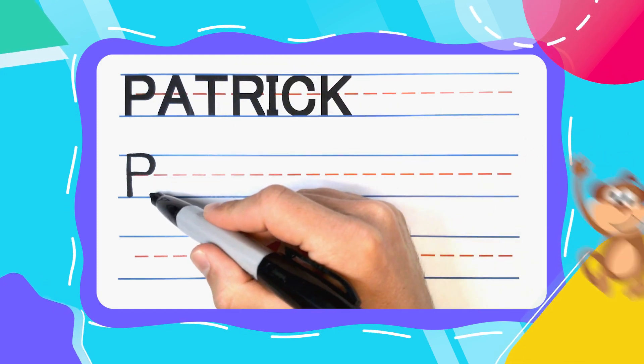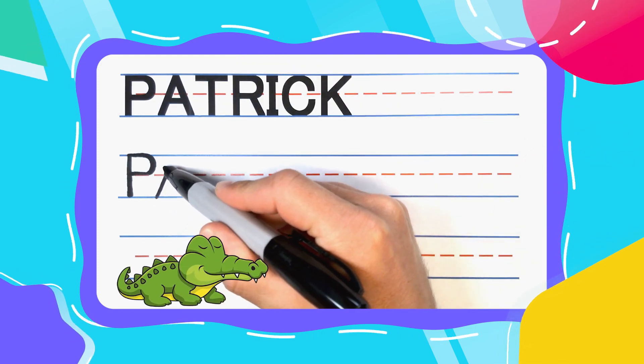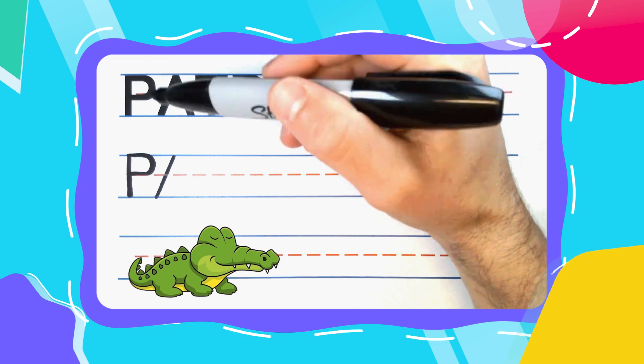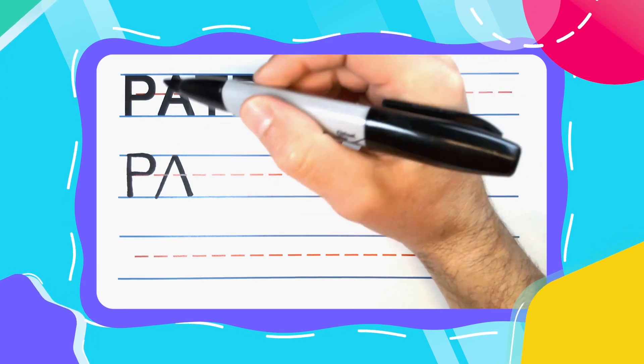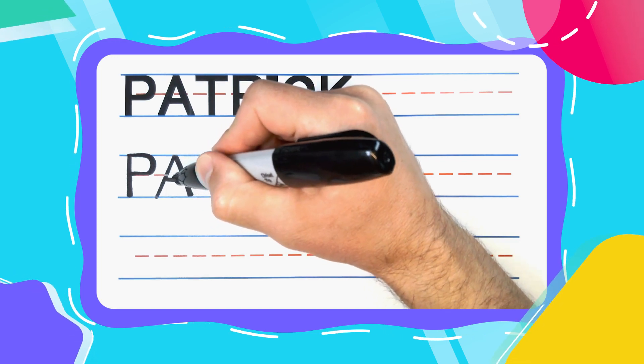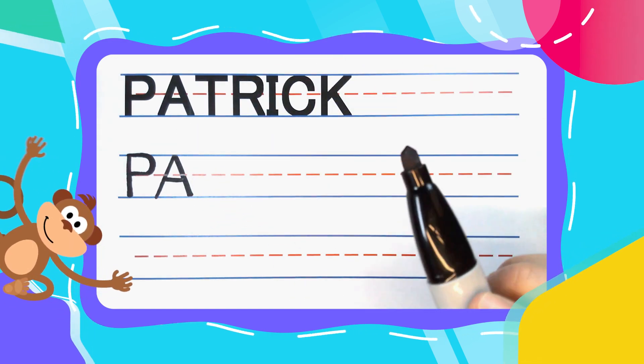The next letter in Patrick is an alligator A. An alligator A starts with a diagonal line up. Keep your pen there, diagonal right back down. You now have an open alligator mouth that can be closed with some alligator teeth.